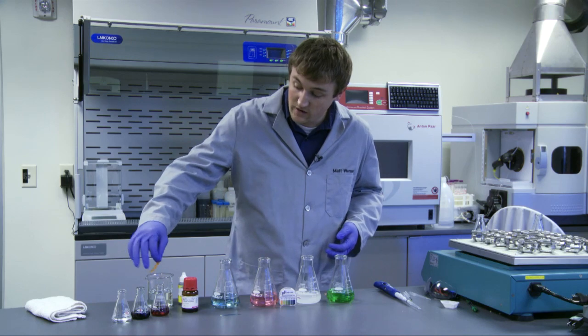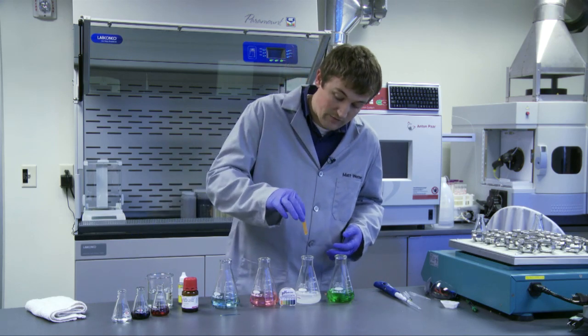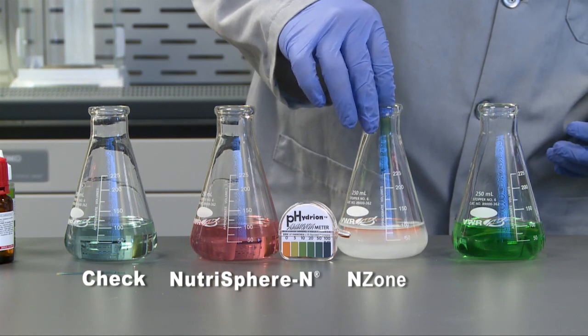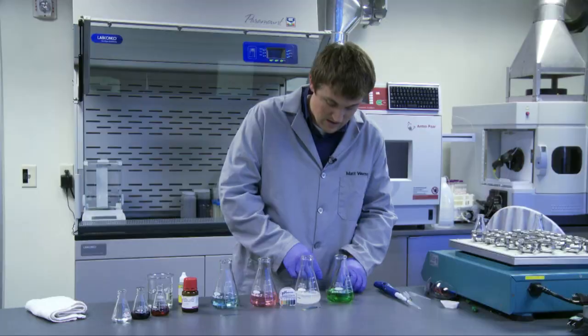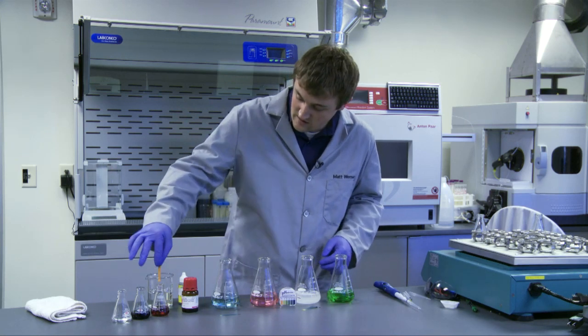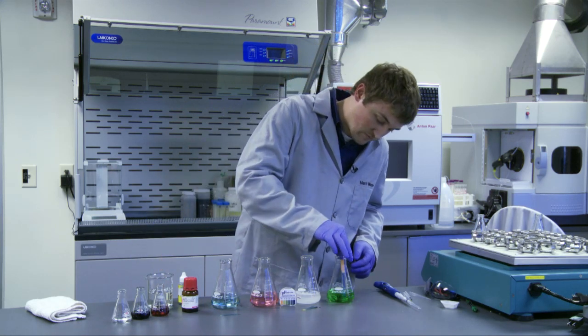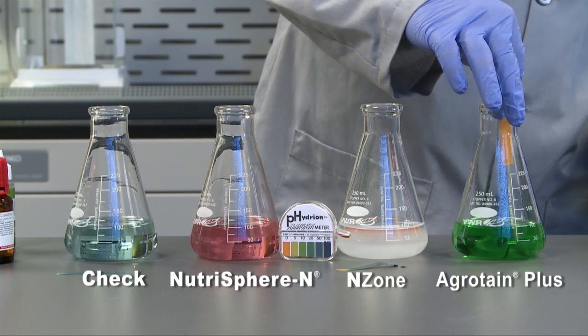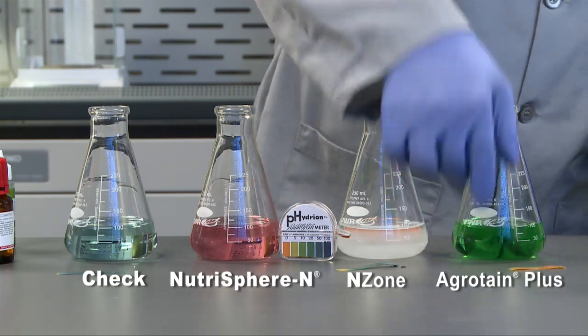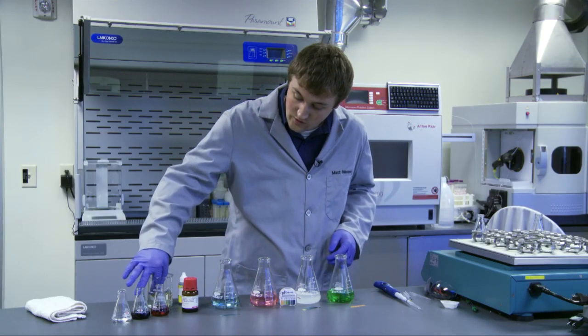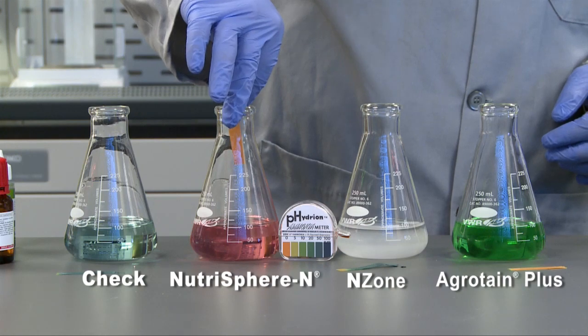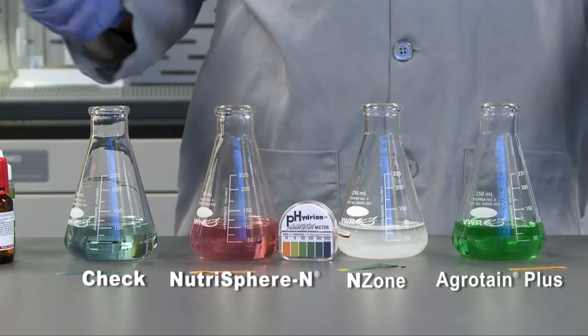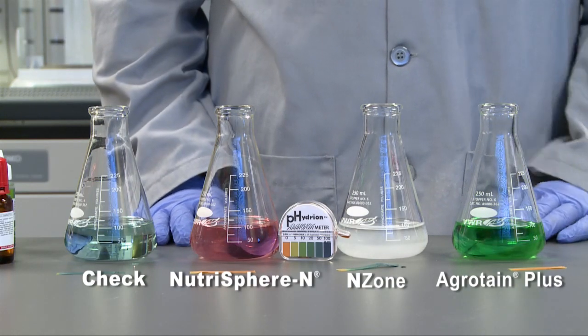So, for our competitive products, we'll have our enzo, which also you can see has a high reading, and then agrotain. It did not change color. And just do one more for our NutraSphere N container. No urea volatilization or ammonia volatilization whatsoever.